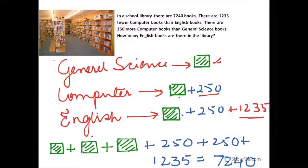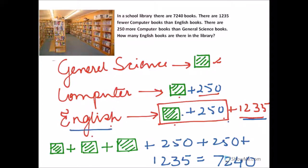So the number of English books can be given by the unit plus 250 plus 1,235, because up to the unit plus 250 gives the number of computer books, and the number of English books is 1,235 more than the number of computer books.